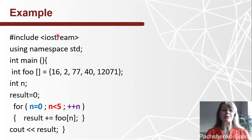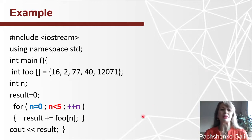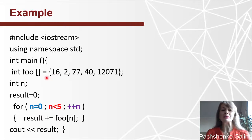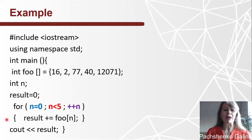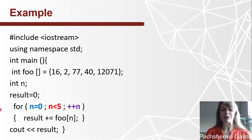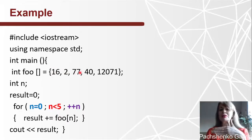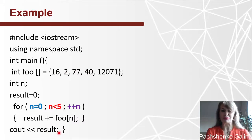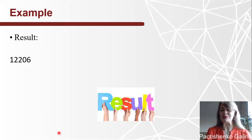Let's consider an example of how we work with an array. Here we declare an array and initialize its values. We find the sum using a compound operator. We start a for loop with an initial value, condition, and increment. In each iteration we take one element and add it to the sum, and the result will be the total sum.